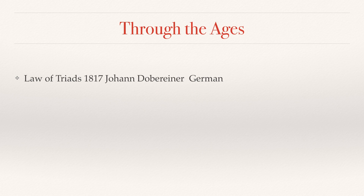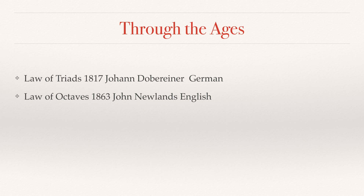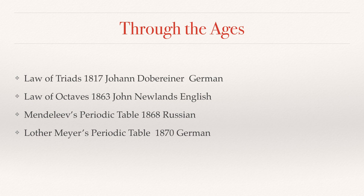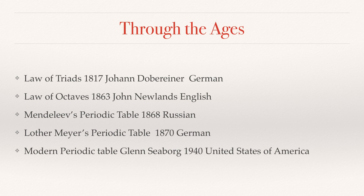Johan Döbereiner, a German chemist in 1817, came up with the law of triads. John Newlands, an English chemist in 1863, came up with the law of octaves. Dmitry Mendeleev, a Russian chemist in 1868, came up with Mendeleev's periodic table. In 1870, Lothar Meyer, a German chemist, published his studies on the periodic table. Glenn Seaborg is the pioneer in developing the modern periodic table in the mid-20th century. He is from the United States.